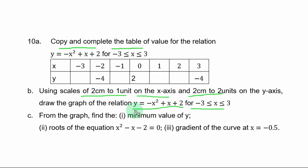Part C of the question. From the graph, find: (i) minimum value of y; (ii) roots of the equation x squared minus x minus 2 equal to 0; (iii) gradient of the curve at x equal to minus 0.5.